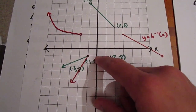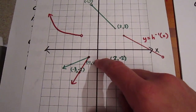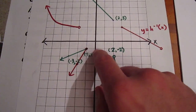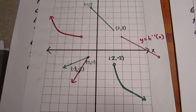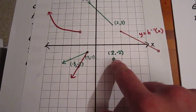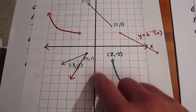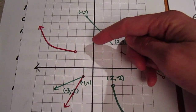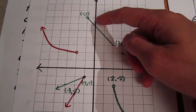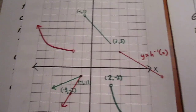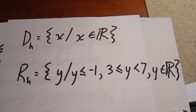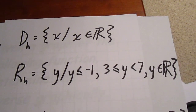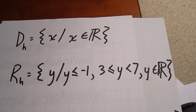The range is the set of all y below negative 1. This portion of the curve and this portion of the curve duplicate their efforts in terms of the range — but it's all one curve. And then the rest of the range is everything from 3 up to and not including 7. So we write that out: the domain is the set of all x elements of the reals. The range is the set of all y such that y is less than or equal to negative 1, or 3 is less than or equal to y less than 7.